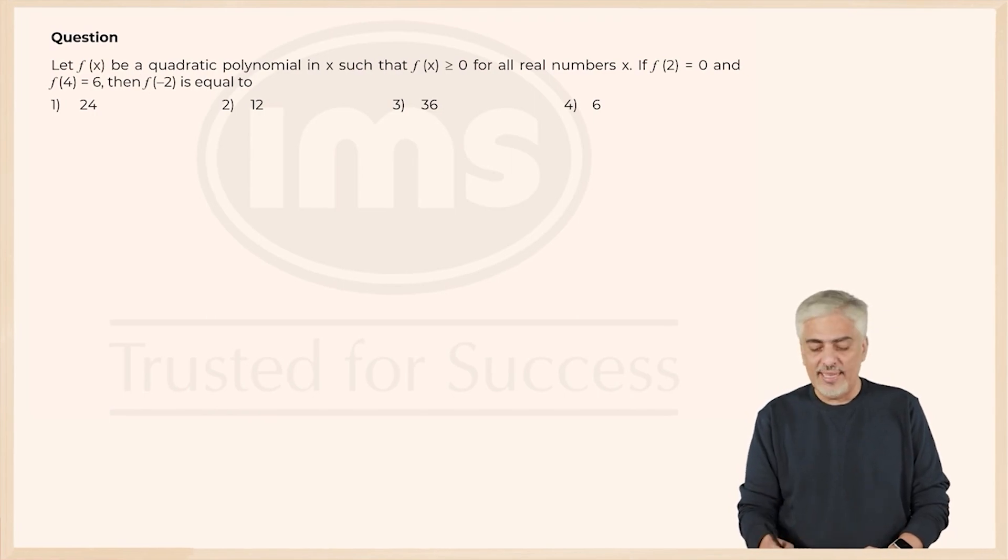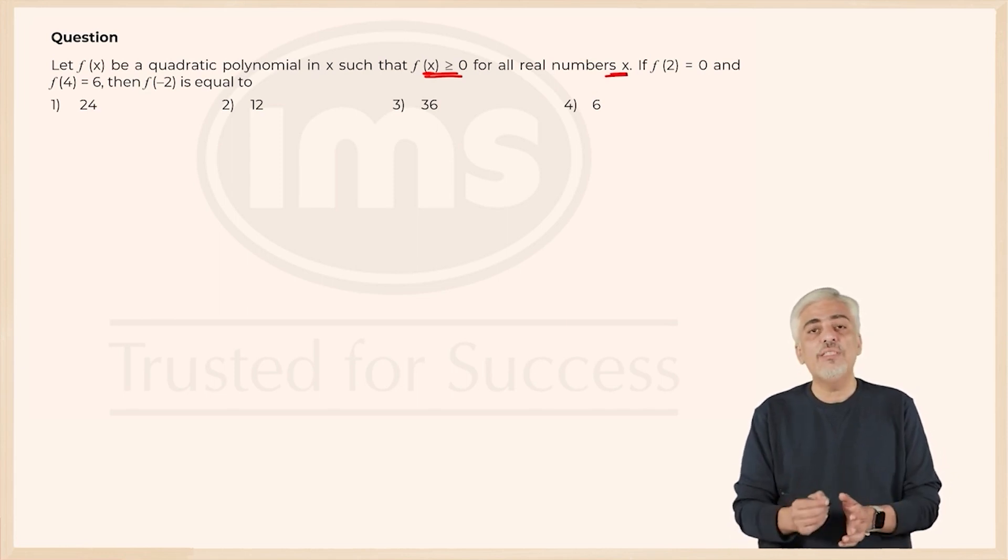Let f of x be a quadratic polynomial x such that f of x is greater than or equal to 0 for all real numbers x. They have told f of 2 is 0.